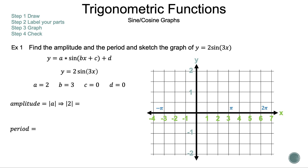Let's substitute 2 for a, so we have the absolute value of 2, which is 2. Now let's find the period. Remember, the period is 2π over the absolute value of b. Let's substitute 3 for b, so we have 2π over the absolute value of 3, which is 2π/3. Now we found the amplitude and the period. Before we sketch the graph, let's convert 2π/3 to a decimal — approximately 2.09 — so we have a better understanding of what that number represents: one cycle.